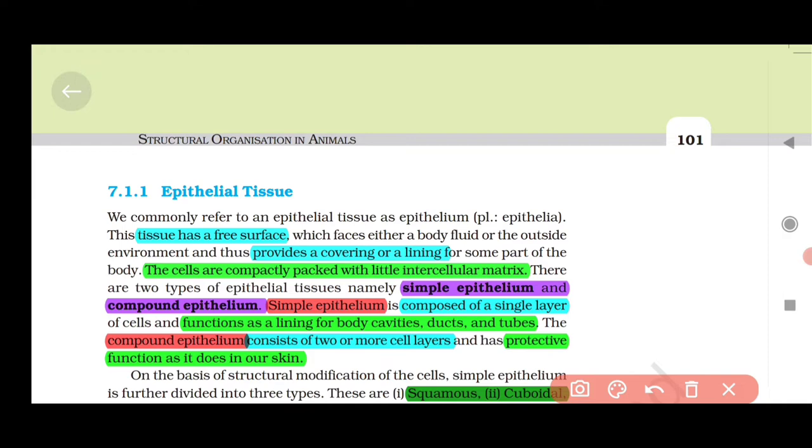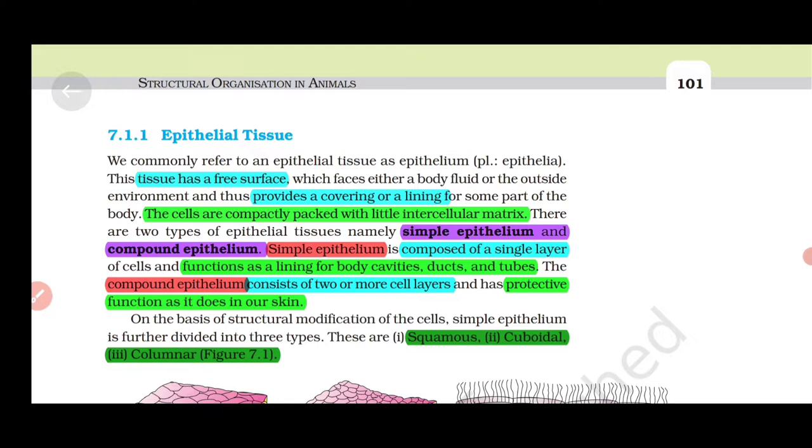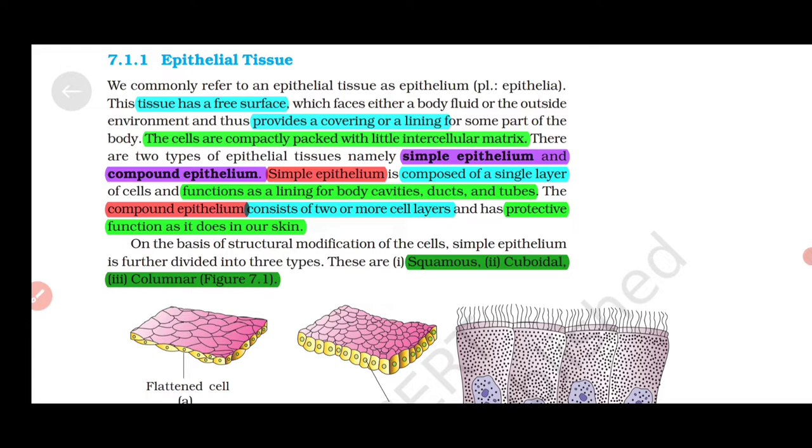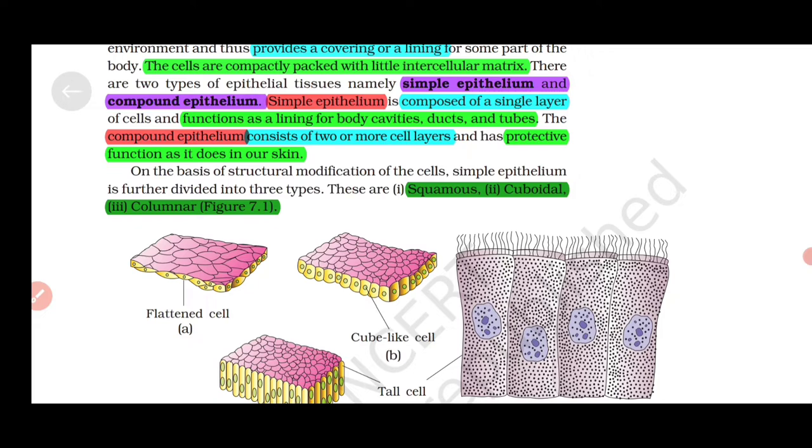7.1.1 Epithelial Tissue has a free surface and provides covering or lining. The cells are compactly packed with little intercellular matrix. There are two types: simple epithelium, composed of a single layer functioning as lining for body cavities, ducts and tubes; and compound epithelium, consisting of two or more cell layers with protective function.